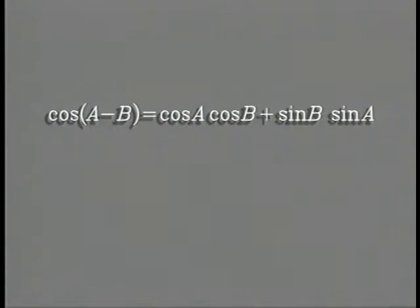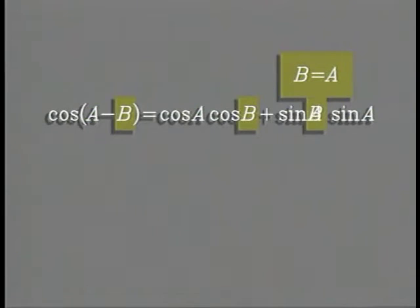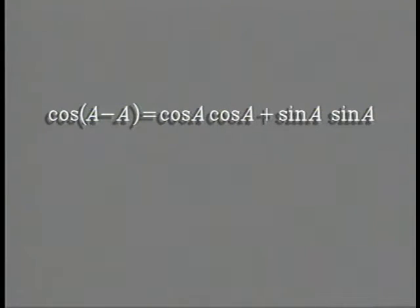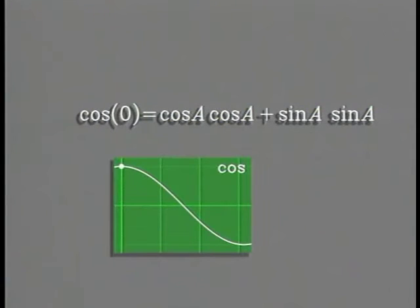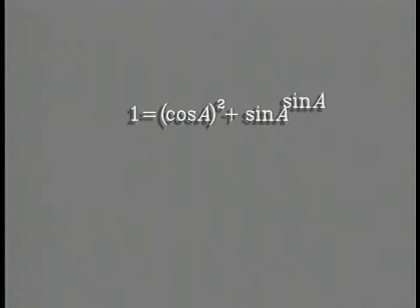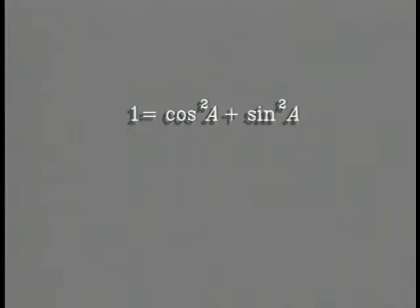You can do the same sort of thing with the subtraction formula for cosines. There's one case that deserves special mention: when the two angles are equal, the cosine of zero equals one, and the subtraction formula becomes our old friend, the Pythagorean identity.